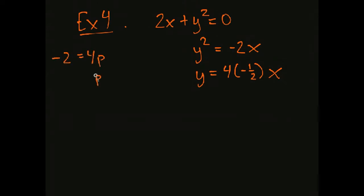Negative 2 is 4p, so p is negative 2 over 4. So that's negative 1 half. Or you can just be thinking about it in your head if you want. And that's a y squared.